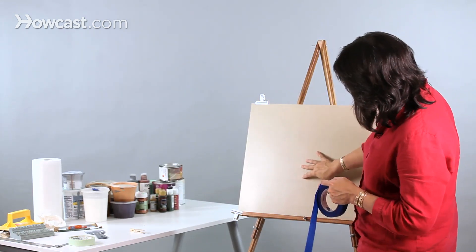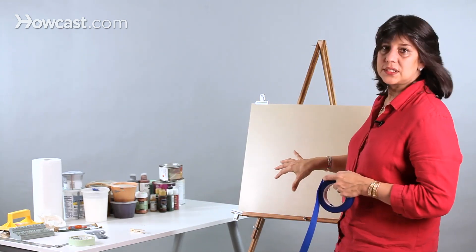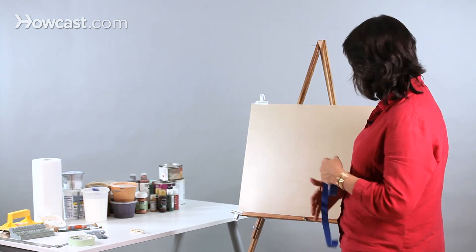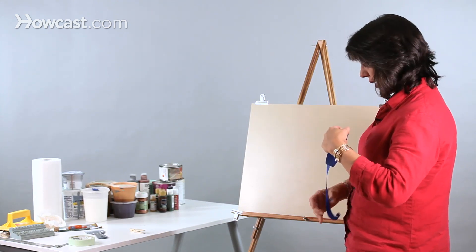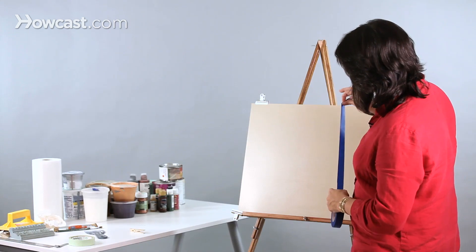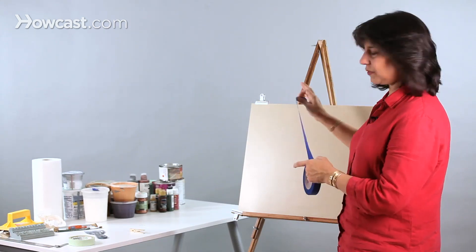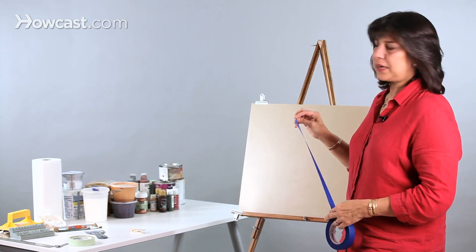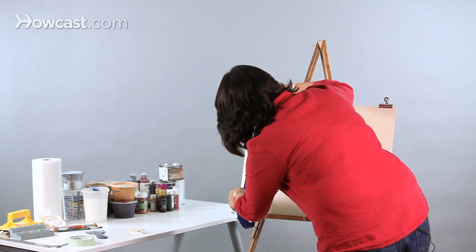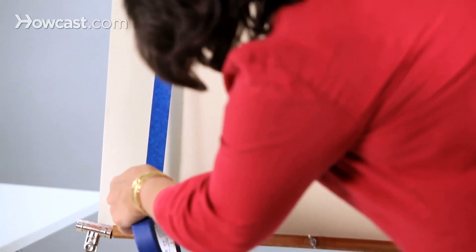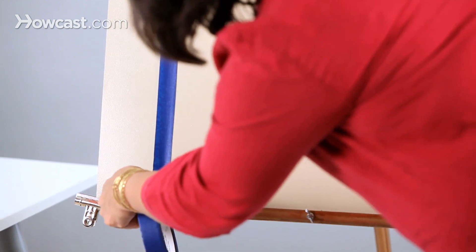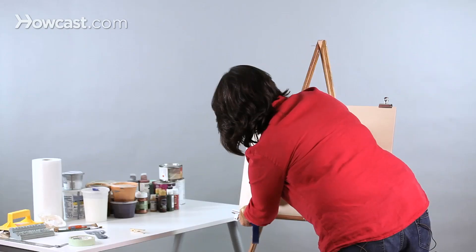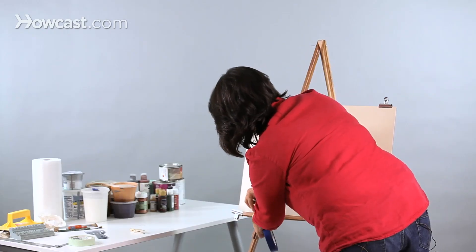What I have done on my base is I've used a semi-gloss sandy colored paint, and for the stripes, once we have them all taped out, we'll be using a flat paint. So here is our first stripe.